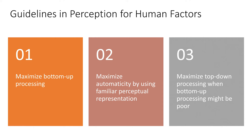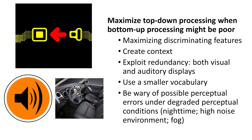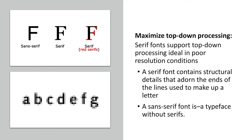Lastly, we want to maximize top-down processing when bottom-up processing might be poor. We can do this by using discriminating features, creating context for the situation, exploiting redundancies such as using both visual and auditory cues, using small easily accessible vocabulary, and being aware of things that may cause perceptual errors like poor lighting, noise, or fog. With something like the switches on the center console of a car, it's hard to use bottom-up processing — so we want to use multiple cues such as location, shape, and maybe a helpful light to improve context. Another clear example is with fonts: serif fonts are much clearer than sans-serif fonts and support top-down processing when conditions are poor, such as with low resolution.